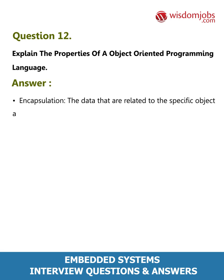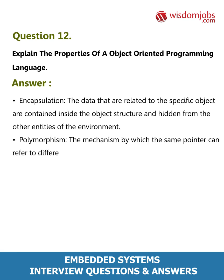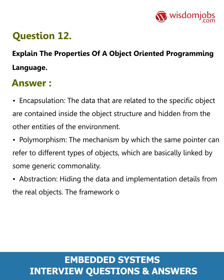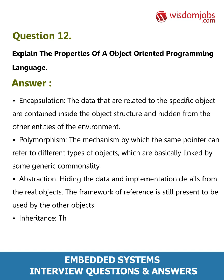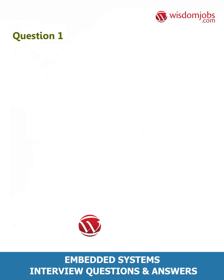Question 12: Explain the properties of an object-oriented programming language. Answer: Encapsulation — data related to a specific object is contained inside the object structure and hidden from other entities. Polymorphism — the same pointer can refer to different types of objects linked by generic commonality. Abstraction — hiding data and implementation details from real objects while keeping the framework available. Inheritance — extracting common features as separate object entities to be reused in a modular fashion.